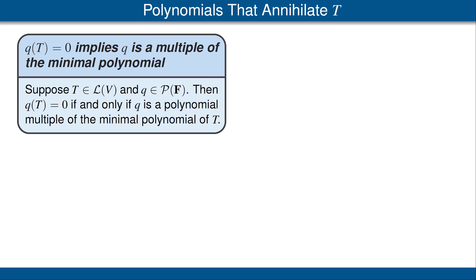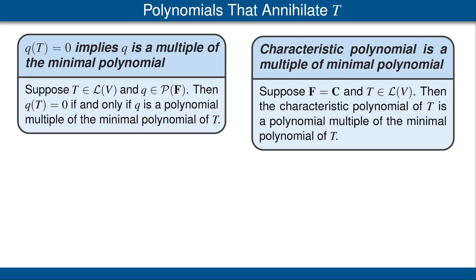Here's a corollary. Suppose the scalar field is the complex numbers and T is an operator on V. Then the characteristic polynomial of T is a polynomial multiple of the minimal polynomial of T. This follows immediately from our result and the Cayley-Hamilton theorem, which states that the characteristic polynomial of T applied to T gives the 0 operator. We'll see later that this also holds when the scalar field is the real numbers.